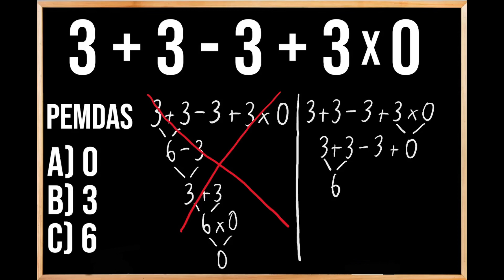Then we bring down the rest of the problem: minus 3 plus 0. We subtract 3 from 6, which gives us 3, then bring down our plus 0. When we add 3 plus 0, we get 3. So that means our answer is B, 3.